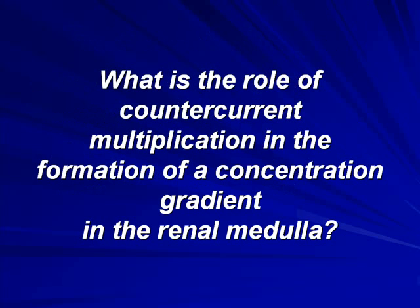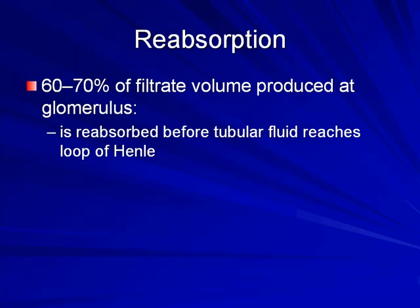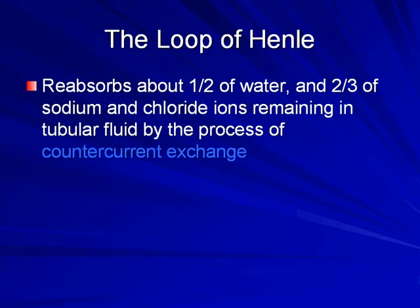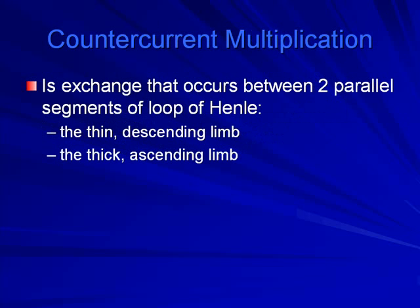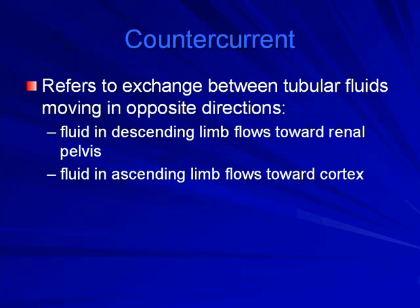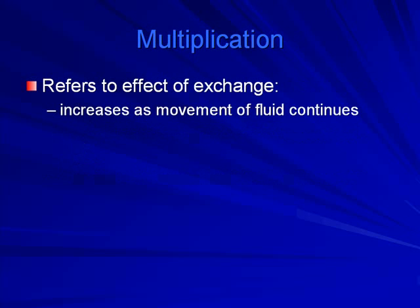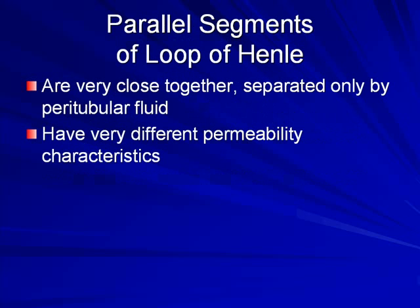Counter-current multiplication forms concentration gradients in the renal medulla. About 60 to 70% of filtrate volume is reabsorbed in the tubular fluid by the time it reaches the loop of Henle. The loop of Henle reabsorbs about half the water and two-thirds of the sodium and chloride ions remaining in tubular fluid by counter-current exchange — an exchange between the thin descending loop and the thick ascending loop of Henle, with tubular fluids moving in opposite directions.